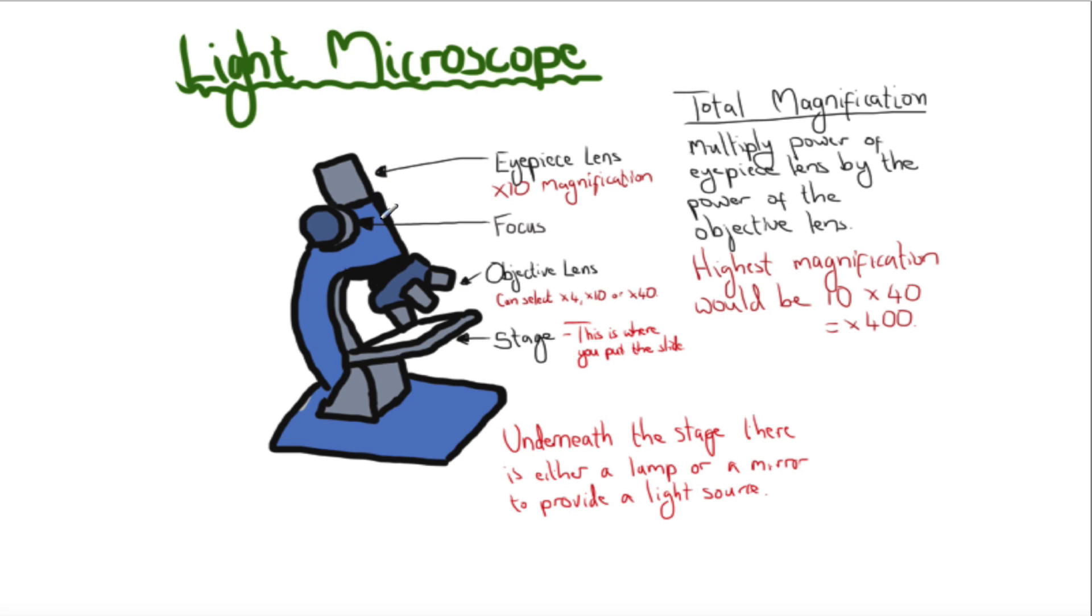Usually the eyepiece lens has a magnification of times 10, though that's not written in stone. What you'll be asked to do is calculate the magnification of a cell or tissue you're looking at. To work out magnification, multiply the eyepiece lens by whichever objective lens you've chosen. For example, if this is 10 and you've selected the 40 magnification objective lens, it would be 10 times 40, giving a magnification of 400.